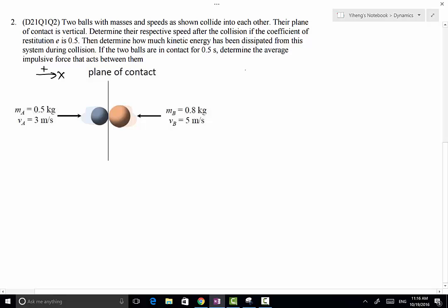So we have MA, the mass of ball A, times VA1, the initial velocity of A, plus MB times VB1. This is the total momentum before the collision, and that equals the total momentum after the collision, which is MA·VA2 plus MB·VB2.